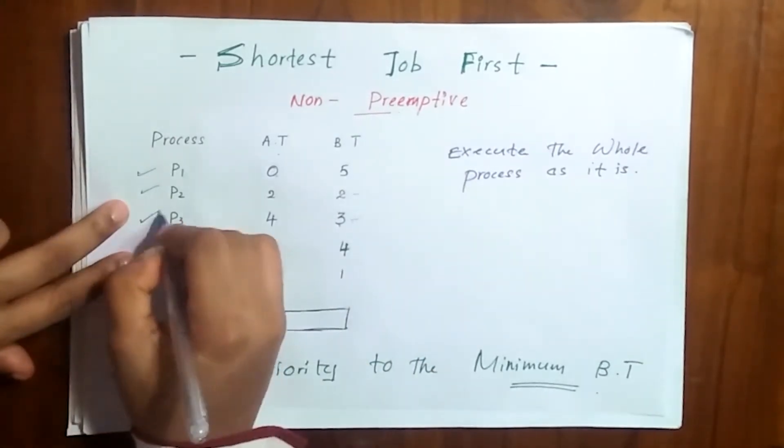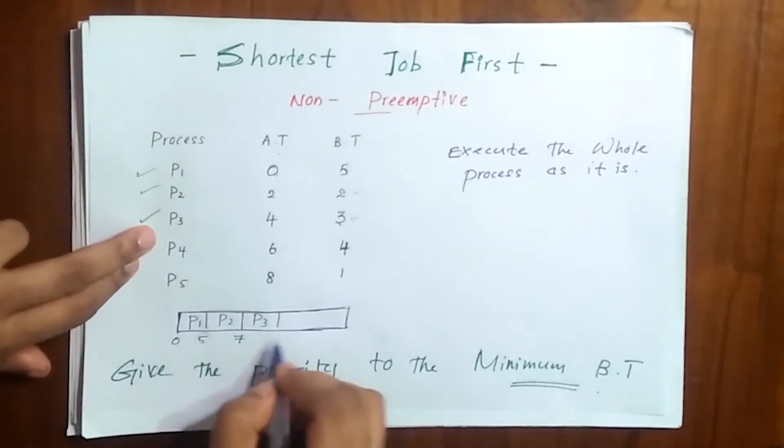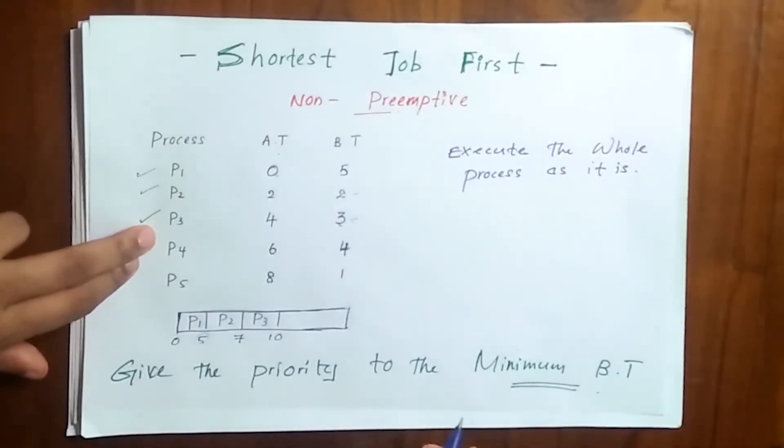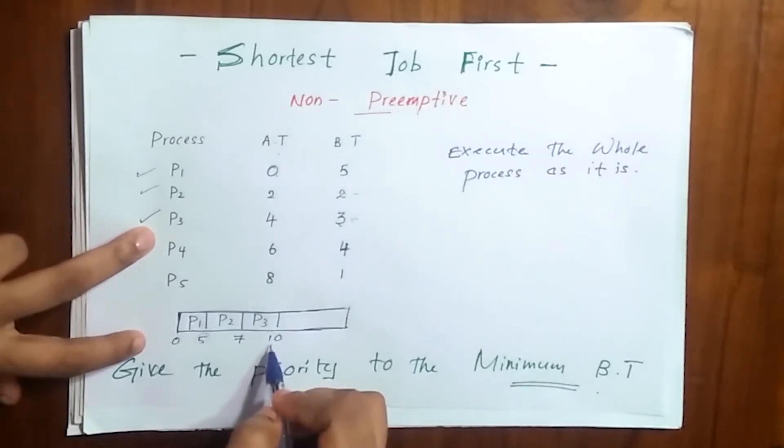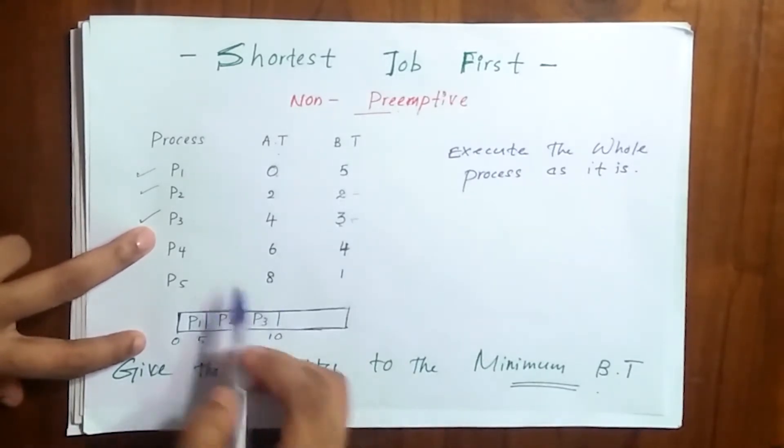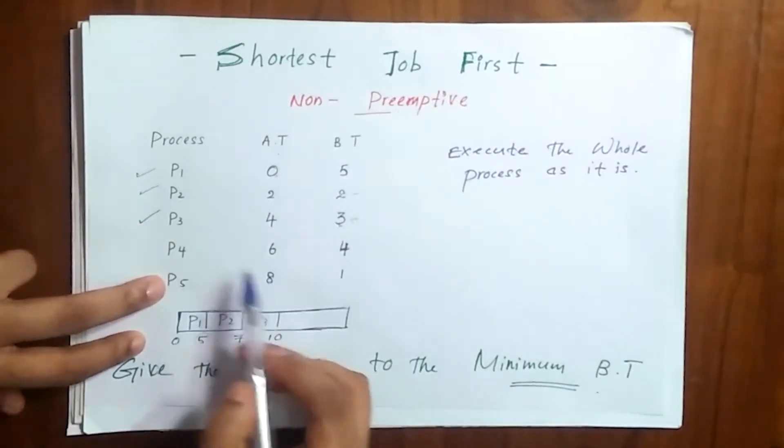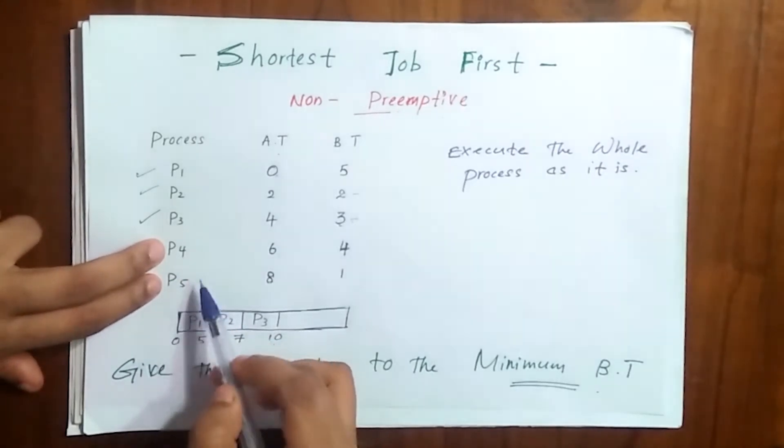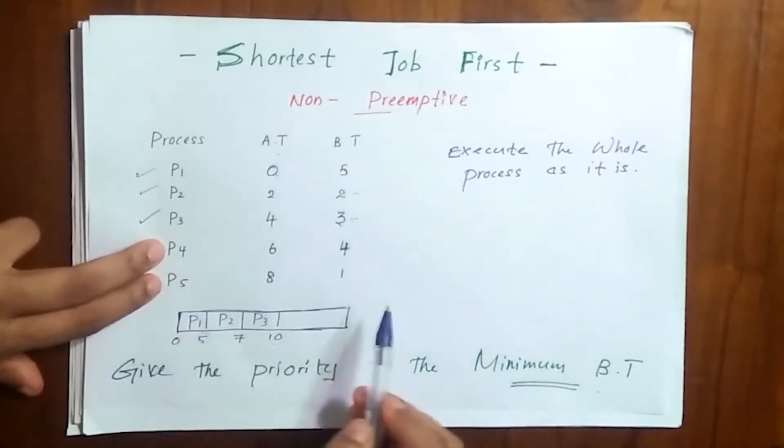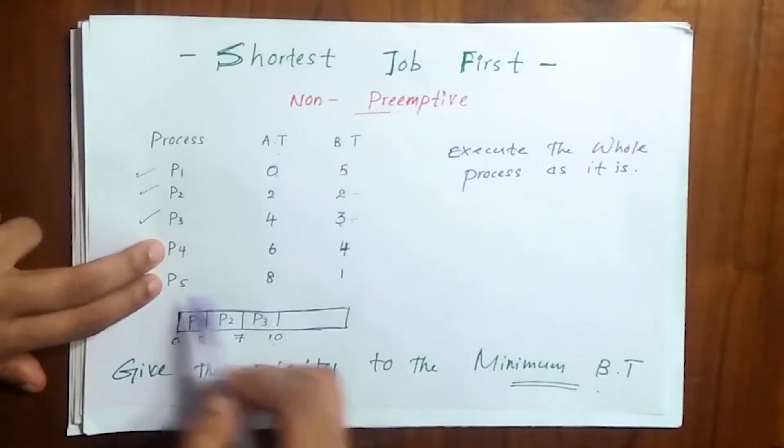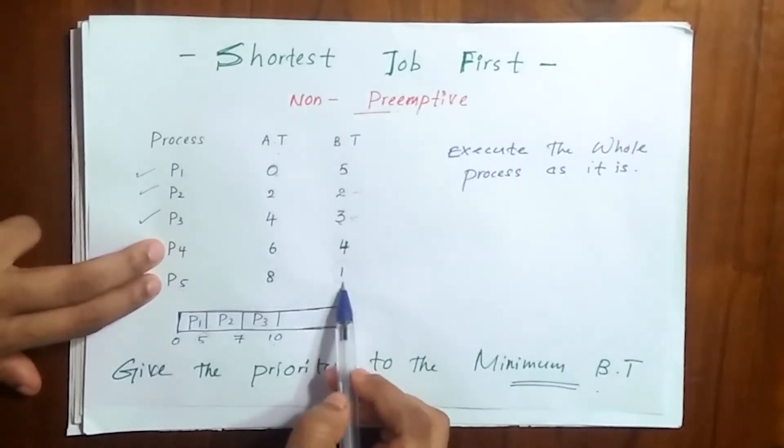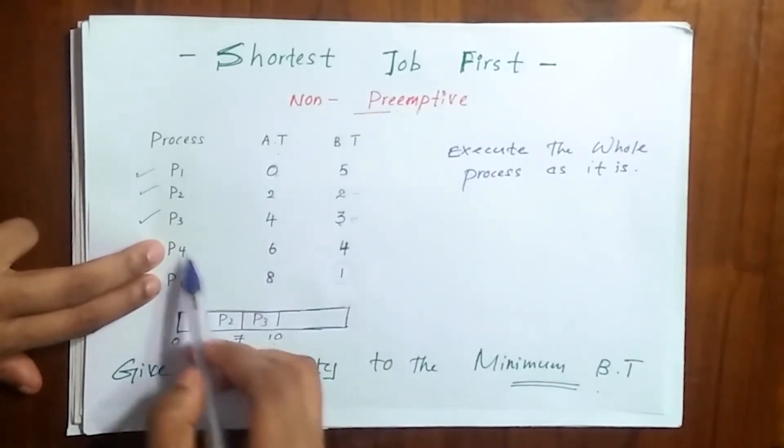It is 3, 7 plus 3 is 10. Now within these 10 seconds P5 also arrives. From these two processes, which comes next? Yes, it is P5 because its burst time is 1.